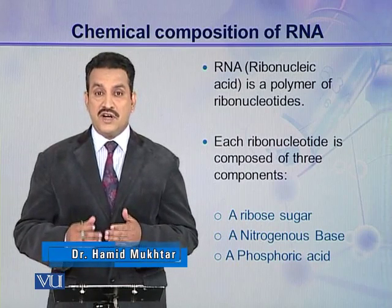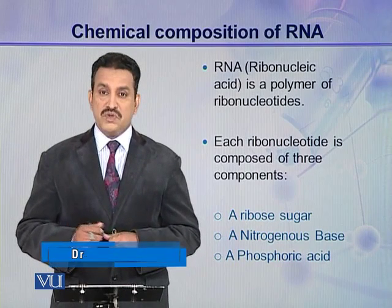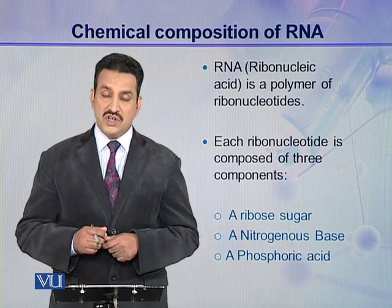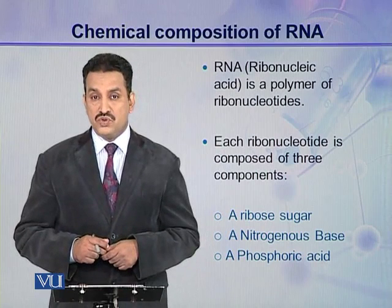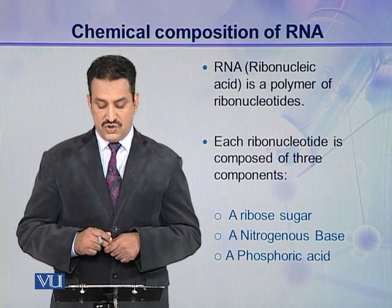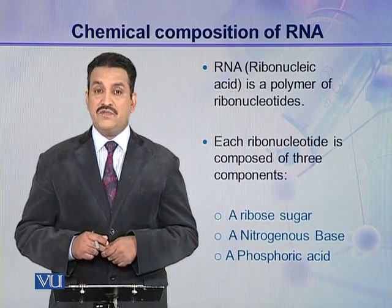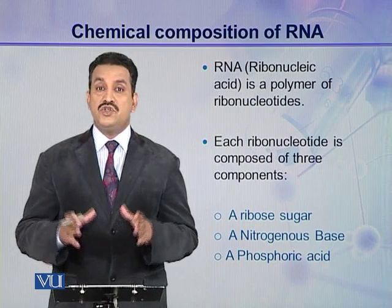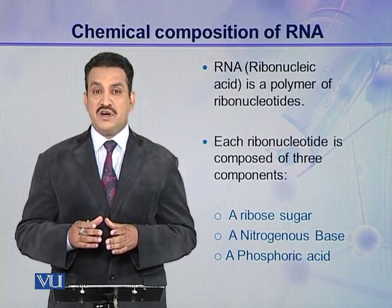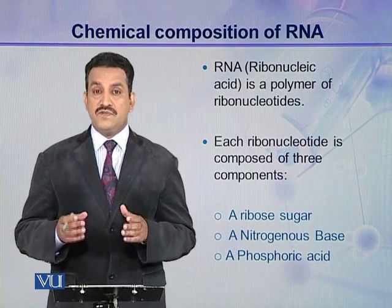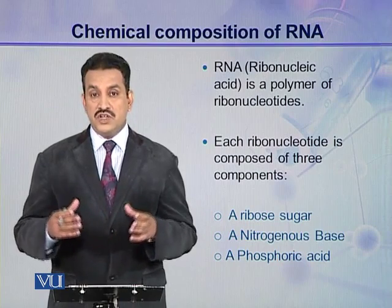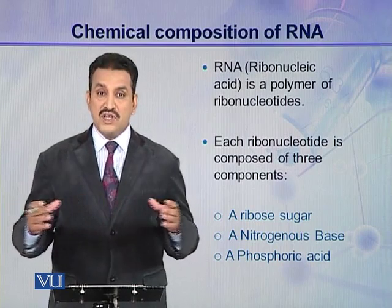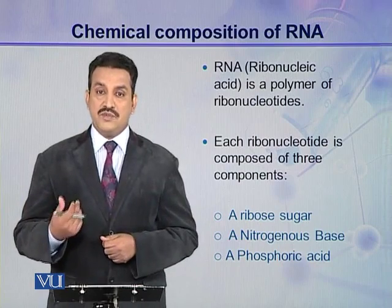So ribonucleotide is the monomer of ribonucleic acids. Each ribonucleotide is made up of three components: ribose sugar, nitrogenous base, and phosphoric acid. These three components join together to make a ribonucleotide, and different ribonucleotides join together to make a polynucleotide, which is ribonucleic acid.